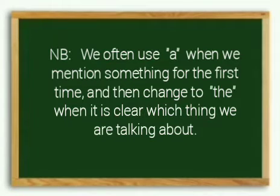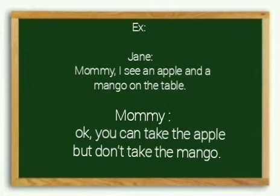We often use A when we mention something for the first time and then change to The when it's clear which thing we are talking about. Example: Mommy, I see an apple and a mango on the table. Okay, you can take the apple but not the mango.